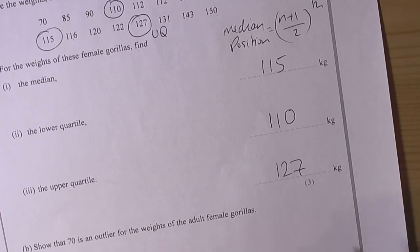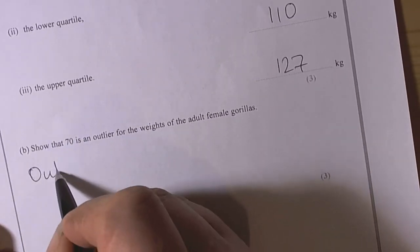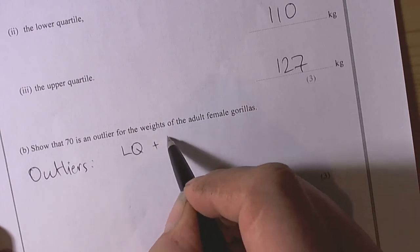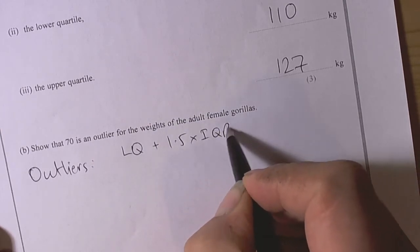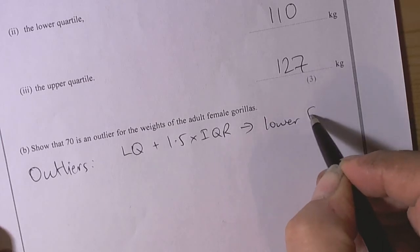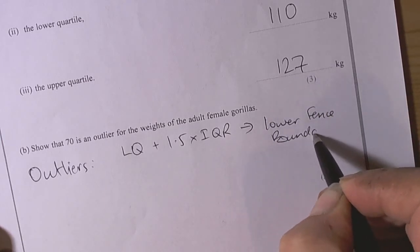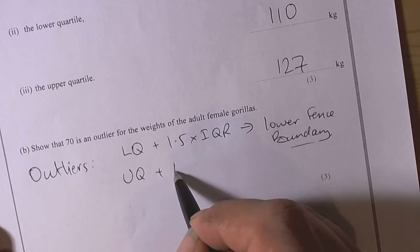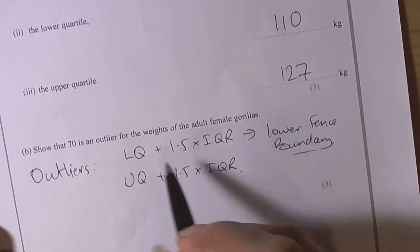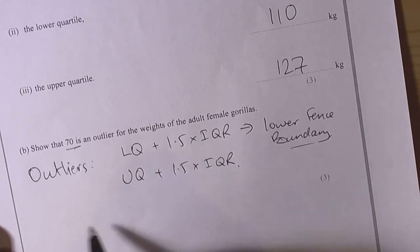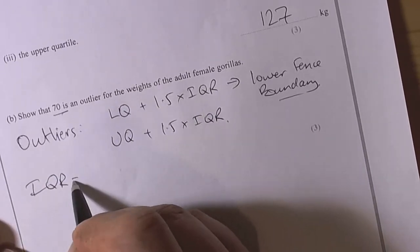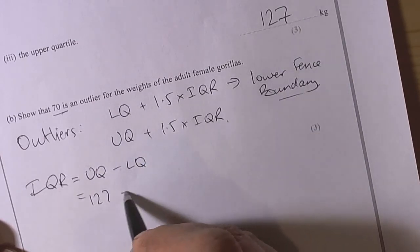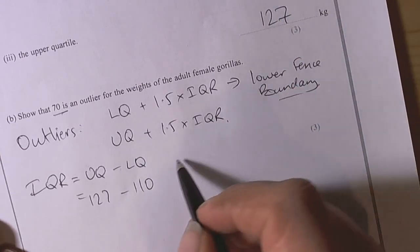Show that 70 is an outlier, well this is where we have to remember another formula. So outlier, so we have two formulas there, so we have the lower quartile value plus 1.5 times the interquartile range, that gives you the lower fence boundary, so in other words anything below that is considered to be an outlier. The upper boundary is found by the upper quartile plus 1.5 times the interquartile range. Well, we're working at the lower end, so I need to work out the interquartile range, well that's quite a simple formula, the interquartile range is the upper quartile minus the lower quartile value, so in this case 127 minus 110 is 17.